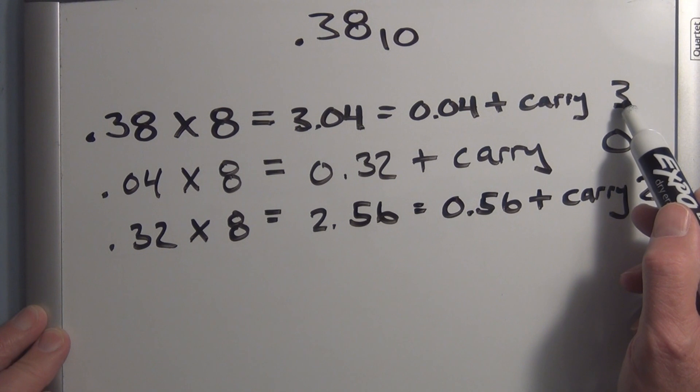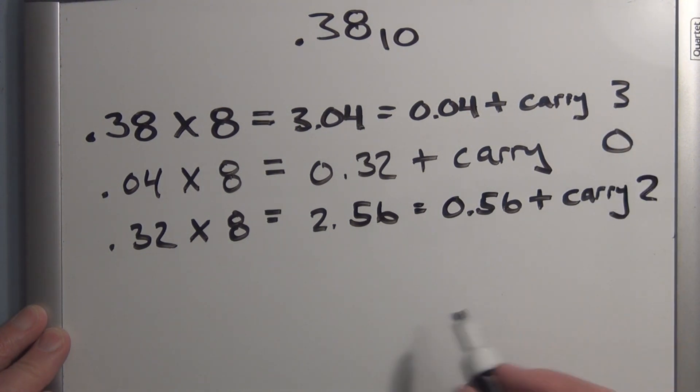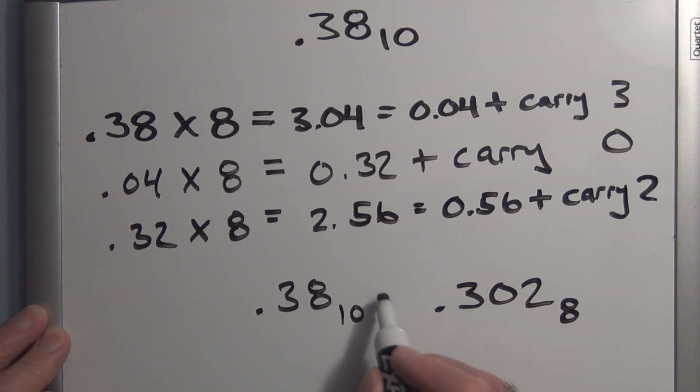which is equal to 0.56, plus the carry of 2. And in this case, the first carry is the most significant digit. So this would be 0.302 octal. So 0.38 decimal is equal to 0.302 octal.